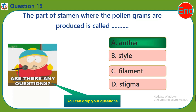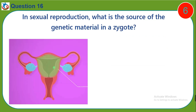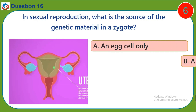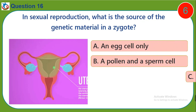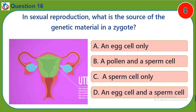Question sixteen: In sexual reproduction, what is the source of the genetic material in a zygote? a) an egg cell only, b) a pollen and a sperm cell, c) a sperm cell only, d) an egg cell and a sperm cell.